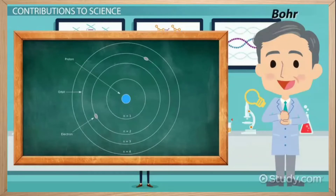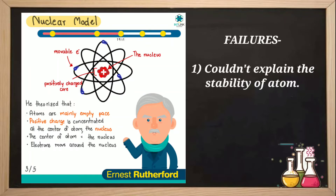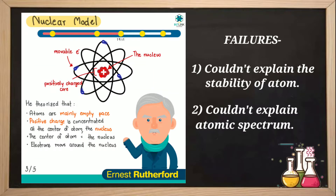Before Bohr, a scientist called Rutherford also gave an atomic model, but that was not successful because his model could not explain how the atom gets stability. According to him, electrons revolve in orbits, but he did not explain their actual energy. Because of this, that model faced failure — if the electron's energy is not stabilized, the electron would finally fall into the nucleus and the atom would not be stable. Second, he could not explain the atomic spectrum. So these were the two big limitations of his model.